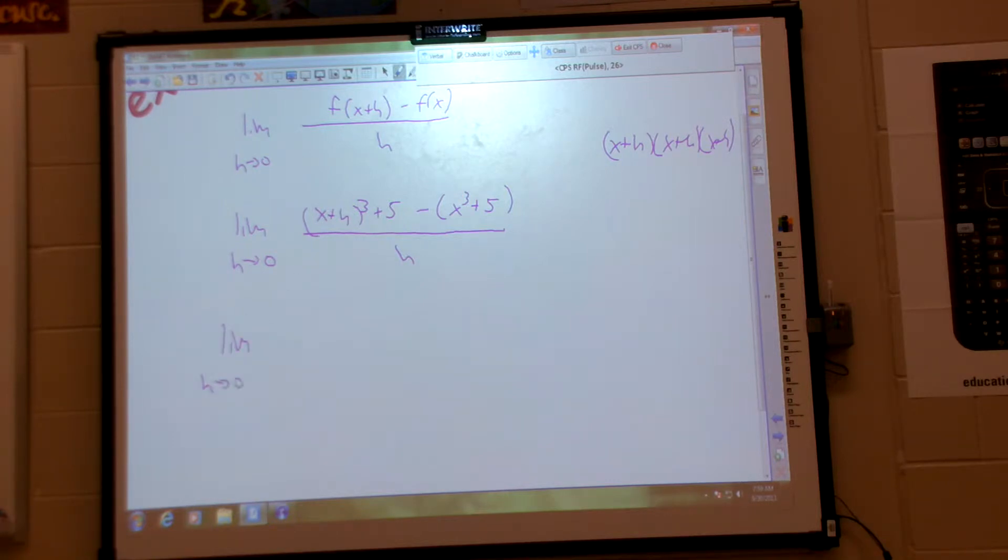Limit H goes to zero. X cubed plus 3X squared H plus 3XH squared plus H cubed plus 5 minus X cubed minus 5 all over H.